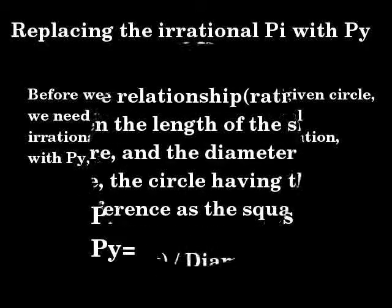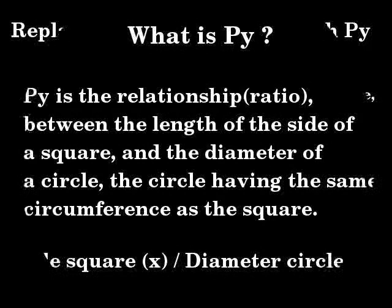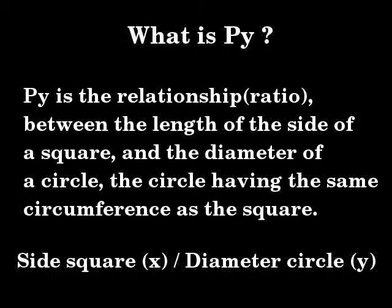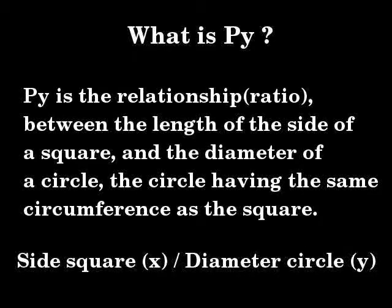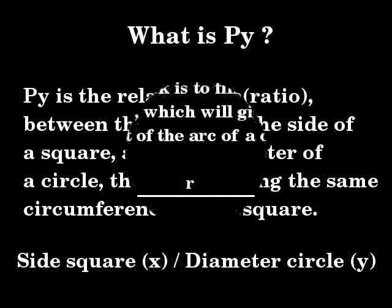Let us make it clear what we mean by Pi. Pi is the relationship — the ratio between the length of the side of a square and the diameter of a circle, the circle having the same circumference as the square. In other words, the side of the square x over the diameter of a circle y.